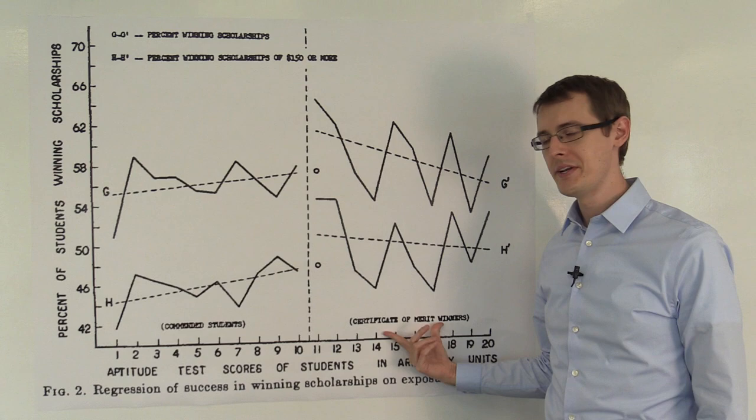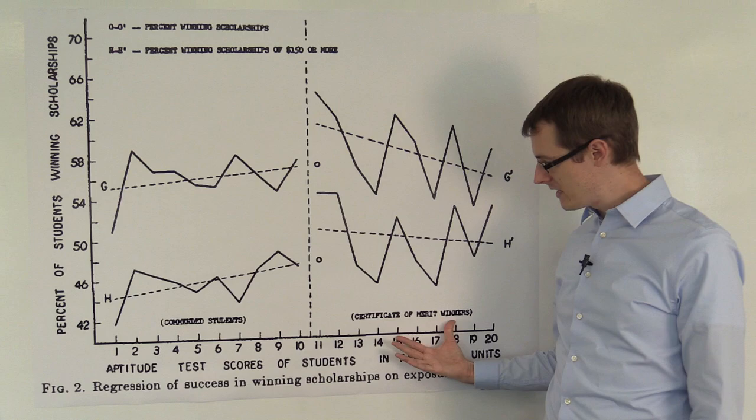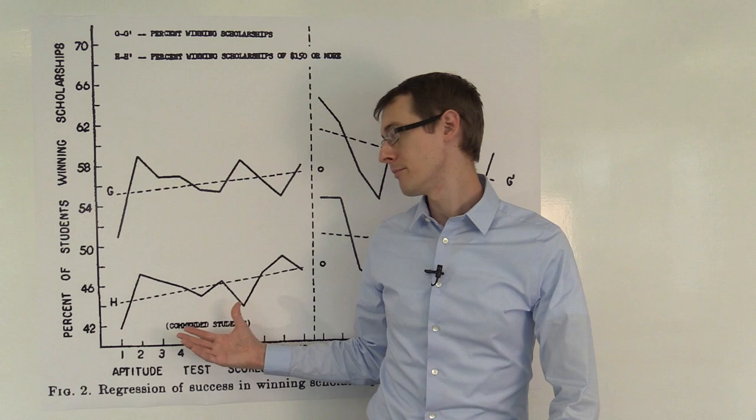So, everyone who got test scores up here, the high test score winners, these people all got Certificate of Merit. These people down here, they did not get the Certificate of Merit.